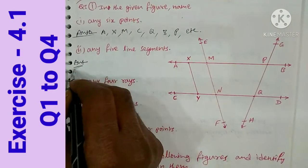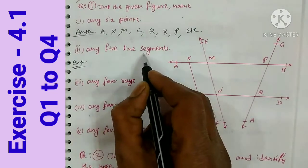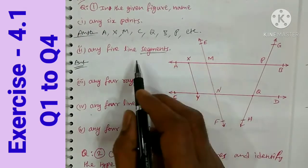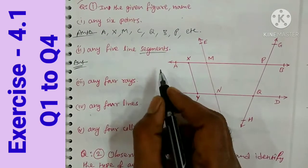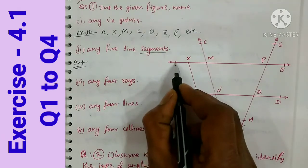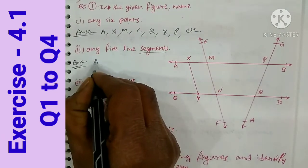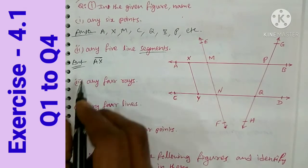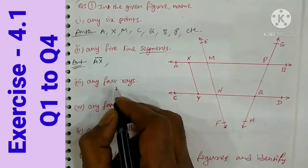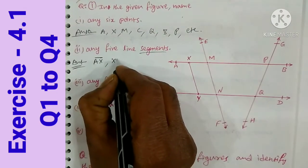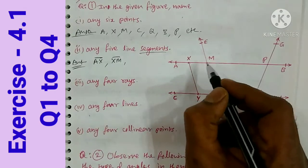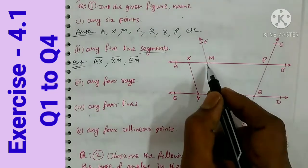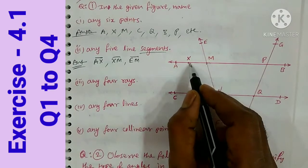The second question is: name any five line segments. A segment has two endpoints. For example, A and X — A is one endpoint, X is the other endpoint, so AX is a segment. We have segments: AX, XM, ME, MP, and PB. A segment has a bar notation with no arrow marks.